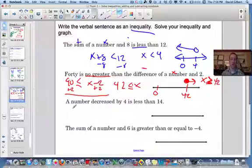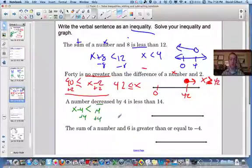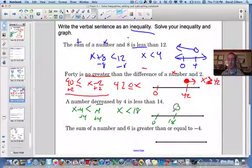A number decreased by 4. So a number decreased by, that's going to be minus, minus 4, is less than, piece of cake, 14. Add 4 to both sides, and we get x is less than 18. So open circle, and we want it to be less than.